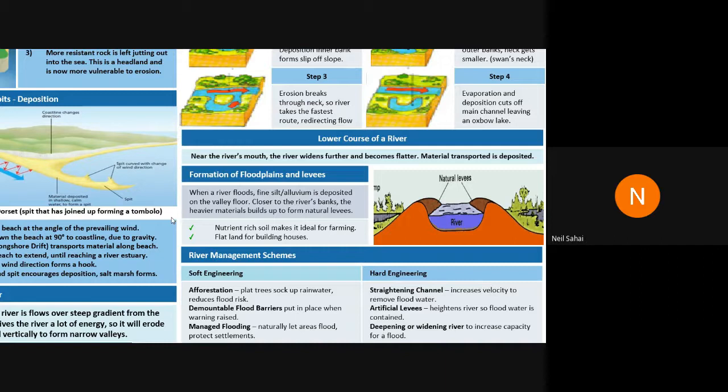Along the lower course you also find natural levees — banks which build up on either side of the river, keeping it slightly higher than the surrounding land. When a river cannot be contained within its channel it spreads out onto the floodplain. As soon as the river leaves the channel it loses energy and deposits its biggest, heaviest material first, building up these natural levee banks on either side. This gives the river a little extra capacity.